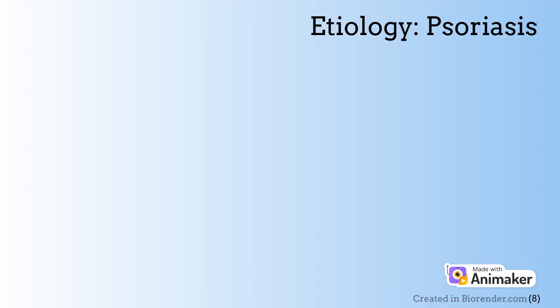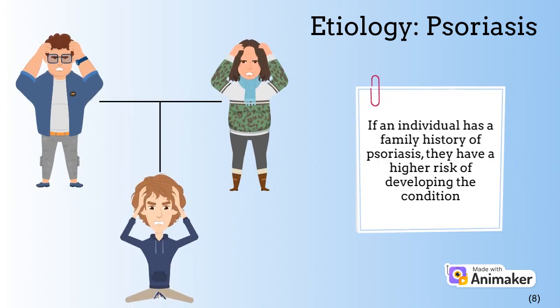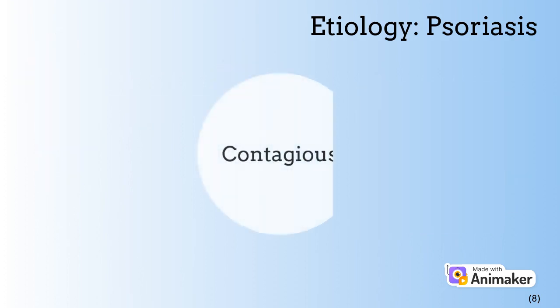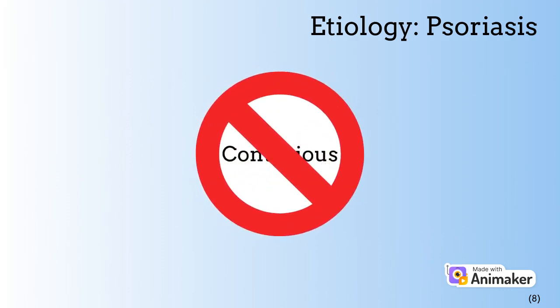Researchers have also found that individuals with certain genes are more likely to develop psoriasis. Since genes are shared across family members, if you have a family history of psoriasis, you have a higher risk of developing the condition. It is important to clarify that neither SD nor psoriasis are contagious, meaning you will not contract these conditions if you are in contact with someone who has either SD or psoriasis.